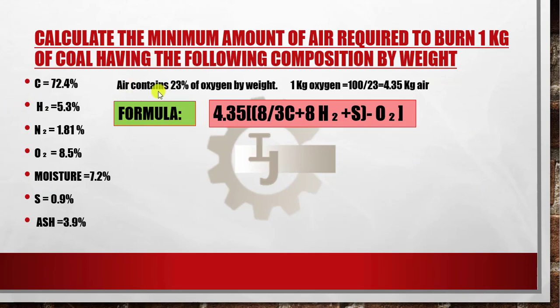We know that air contains 23% oxygen by weight. So for 1 kg of oxygen, we need 100/23 = 4.35 kg of air. The formula to calculate the minimum amount of air required to burn 1 kg of coal is: 4.35 × (8/3 × C + 8 × H₂ + S − O₂).